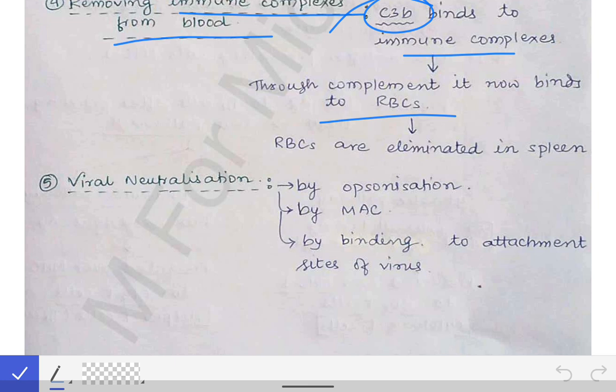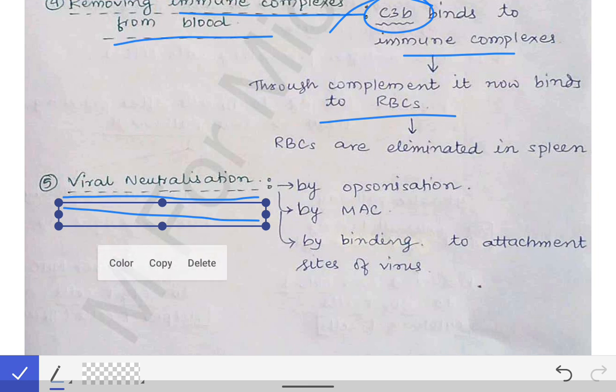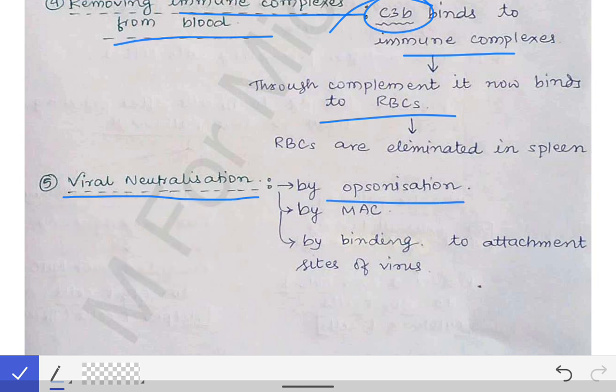The next function performed by complement proteins is viral neutralization. The first method is by opsonization: they bind to viral particles and make them palatable to macrophages or monocytes, which engulf and remove those viral particles from the blood. The second method is by formation of MAC: complement proteins form MAC complexes that create pores on viral surfaces, causing lysis of those viruses. The third way is by binding to the attachment sites of viruses so the virus cannot bind to its specific binding site in the body, thereby neutralizing the viruses.